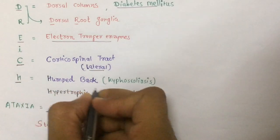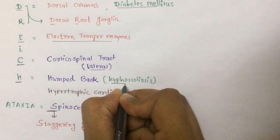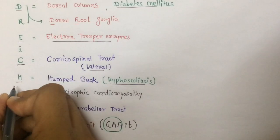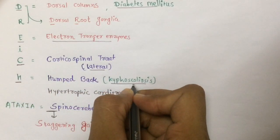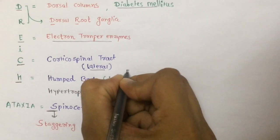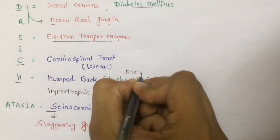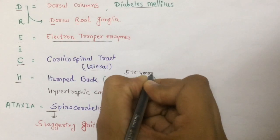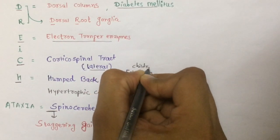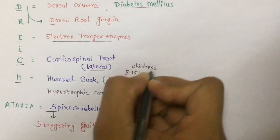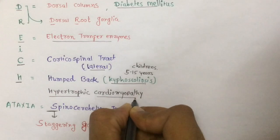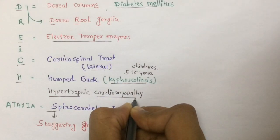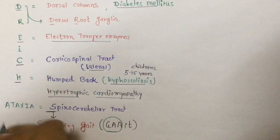From C, you can remember corticospinal tract — particularly the lateral corticospinal tract — which is responsible for spastic paralysis. From H, you can remember humped back, also known as kyphoscoliosis, which is the most common presentation in children between 5 to 15 years of age.